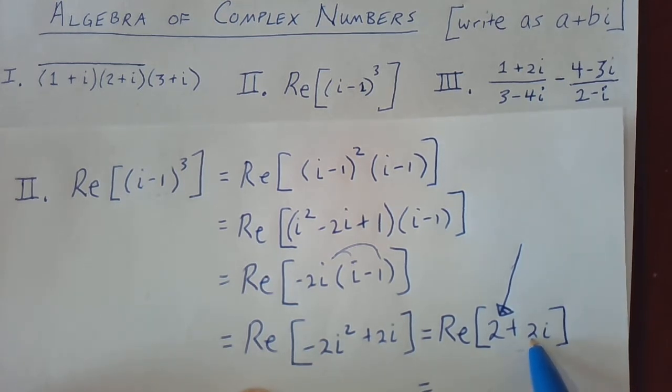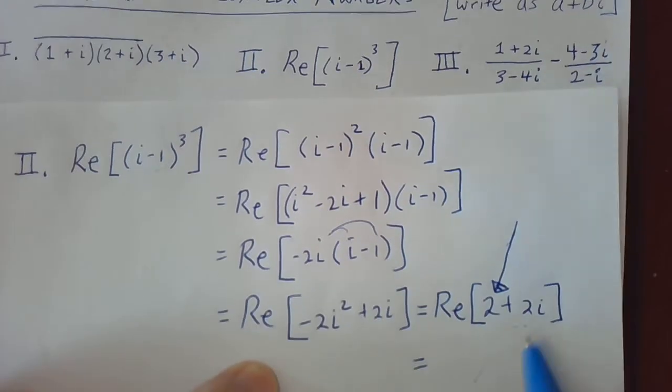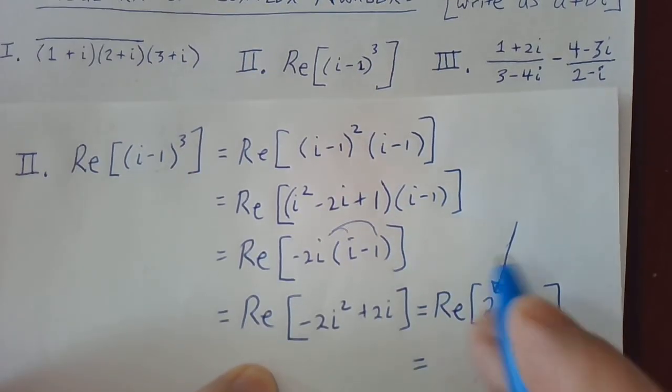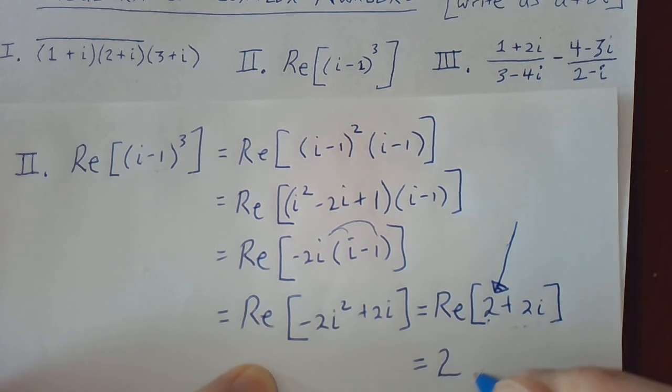The imaginary part would also be 2 in this case, but the real part of this complex number is that number 2.